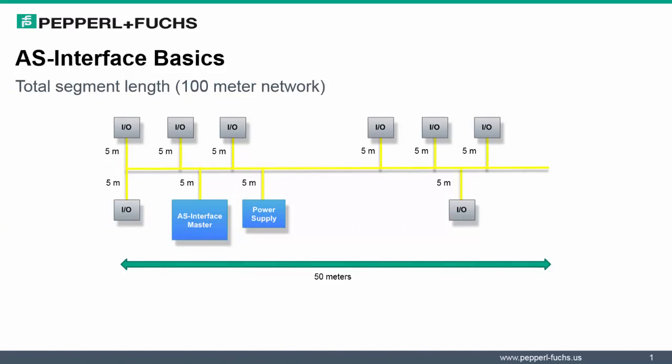A fundamental characteristic of an AS Interface network are the 100-meter segments. As a network is arranged, there may be multiple drops from the main trunk line down to the various IO modules. As these drops are calculated, they cannot exceed the 100-meter limit.